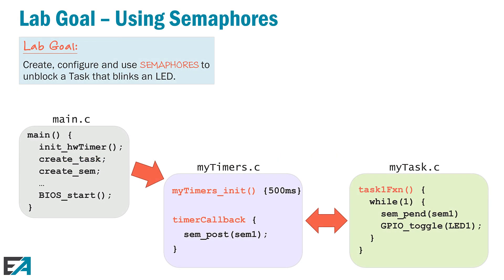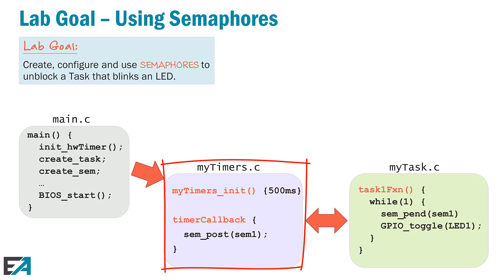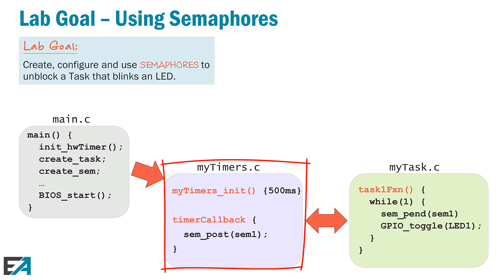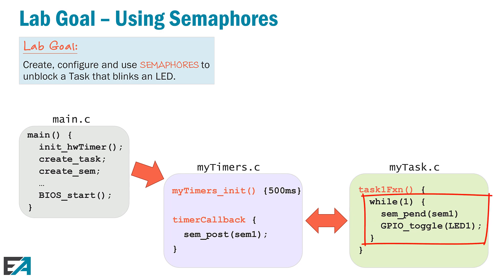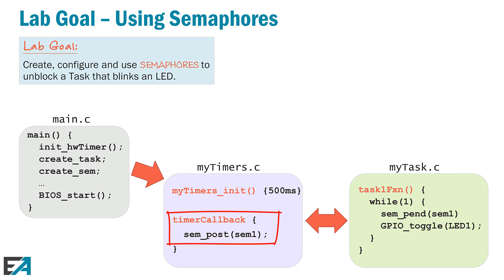The lab goal is this: we created a hardware interrupt service routine using a timer — we actually borrowed that code from lab 4C. We're using that same code to set up a timer that counts down every 500 milliseconds, and when it hits zero, a hardware interrupt service routine runs. As part of the timer driver callback function, we're going to write a semaphore post, which unblocks the task that has a semaphore pend. Previously, we had a task sleep for 500 ticks and toggle the LED. Now we're taking out the task sleep and using the signaling mechanism from the timer driver to unblock the task.